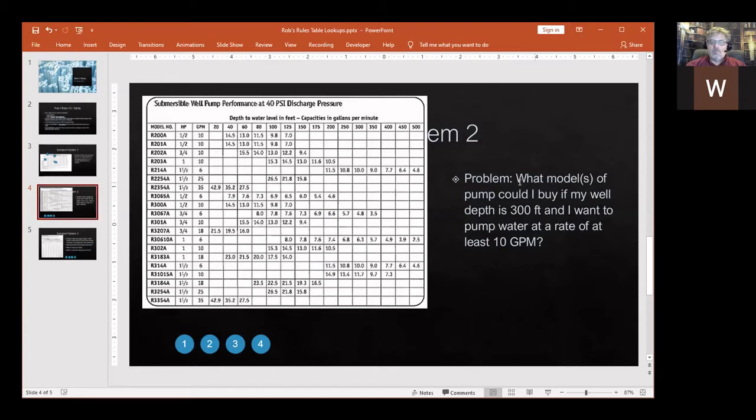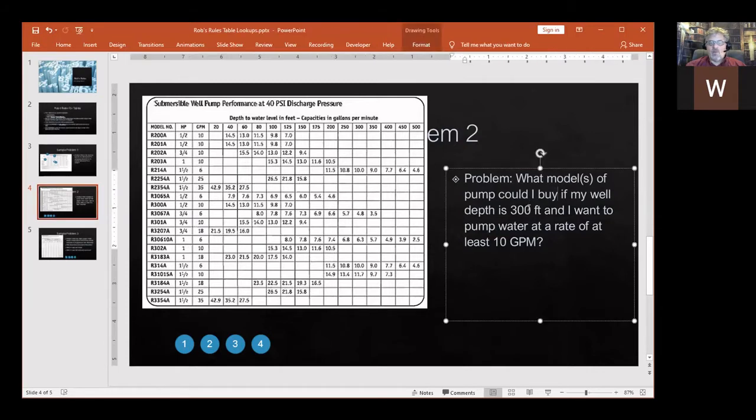The question is what model of pump could I buy if my well depth is 300 feet and I want to pump water at a rate of 10 gallons per minute.